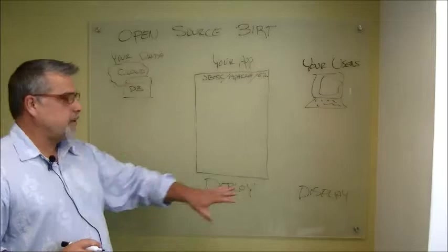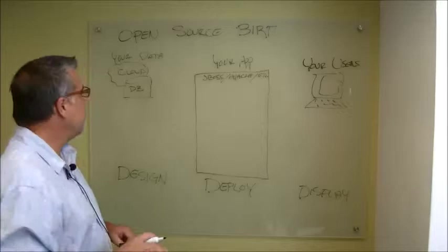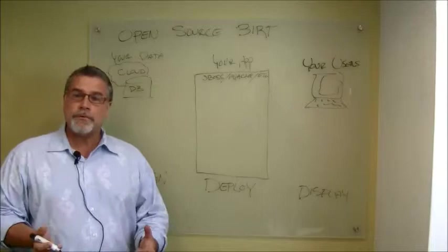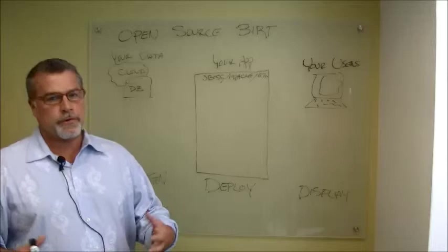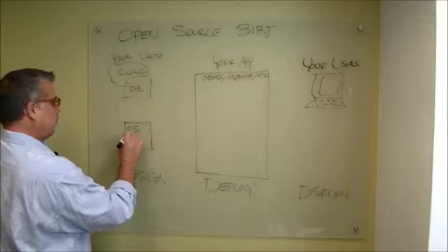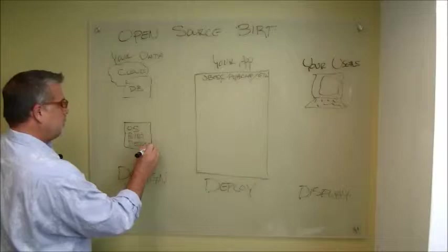So we have what we call the three Ds of the BERT ecosystem: Design, deploy, and display. So before any of the BERT parts are in, this is your application, your enterprise, your OEM. Now let's facilitate drawing a line from your data through your application to your users, and we're going to utilize BERT as that vehicle.